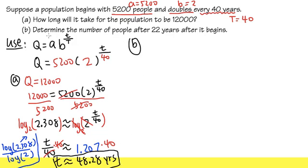Now, part B says we are going to find the number of people after 22 years. So this is more straightforward because we just need to plug in t being equal to 22. So put the t right here, 22. So Q, which is the quantity of people, that's equal to 5200 times 2, raised to the 22th power, divided by 40.